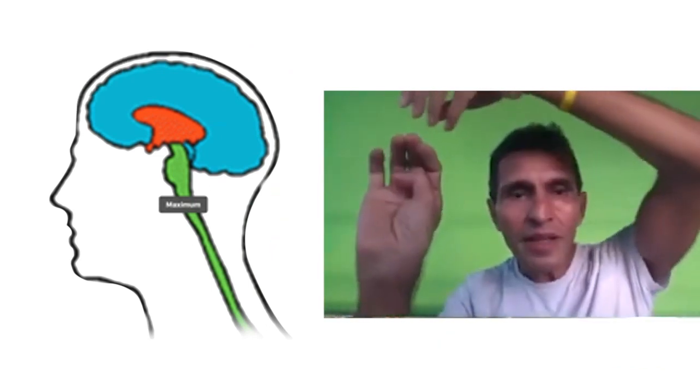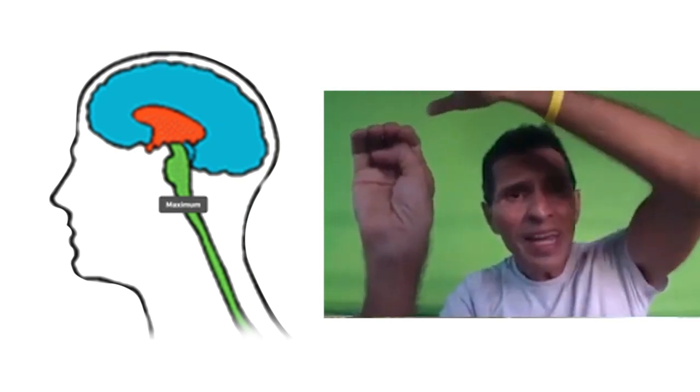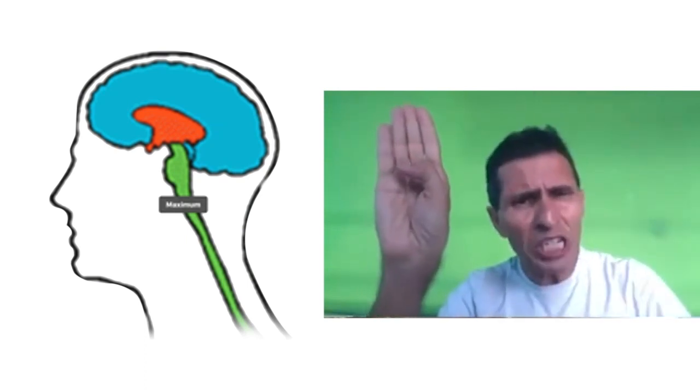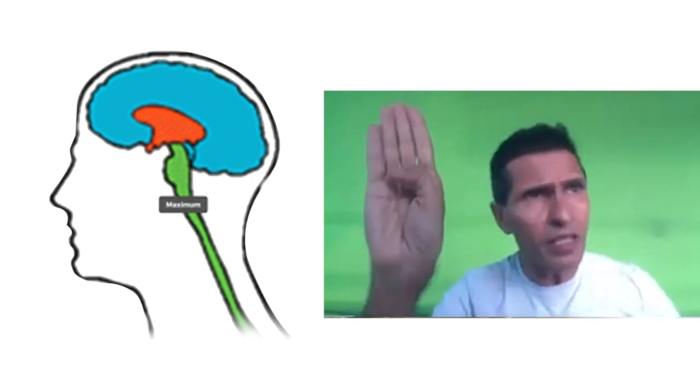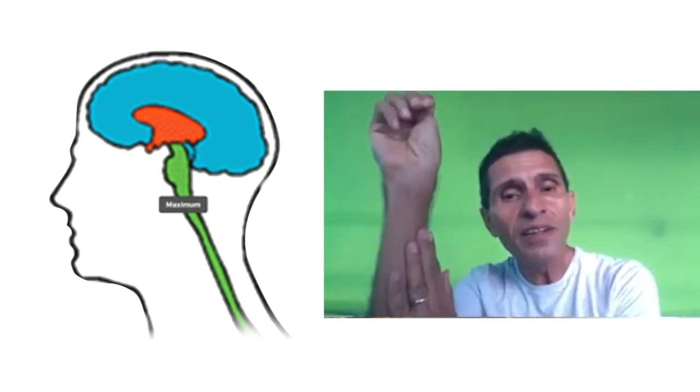So this is about anger. Anger thoughts came. We can let it go, but no, we processed it. 'No, I am angry. Why she did like this? Why he did like this? Why this is not right?' And then we stored it here, and now it has become our nature. And anyone freaks us, we start shouting, 'Yeah, they did like this, you know.' So that is what happens typically. Do you agree with this?